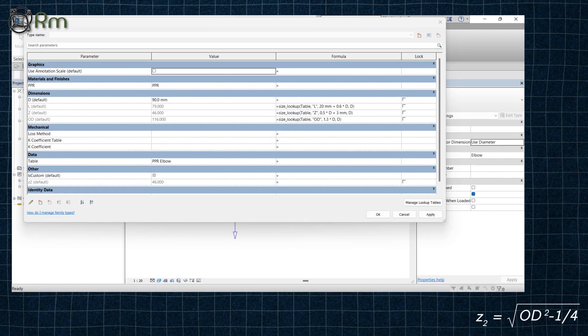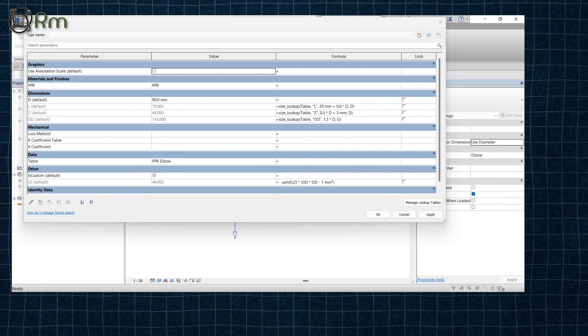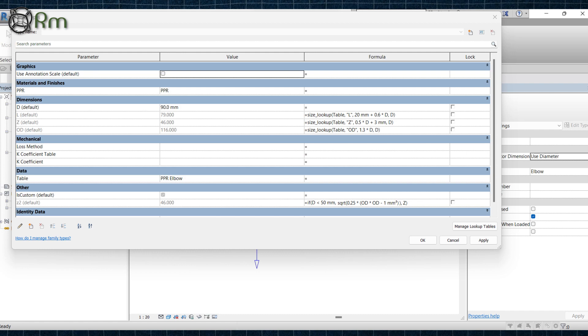Merge formula in the formula bar of family parameter calculations. Apply if formula for sizes 20 to 40 to calculate Z2 and that's it.